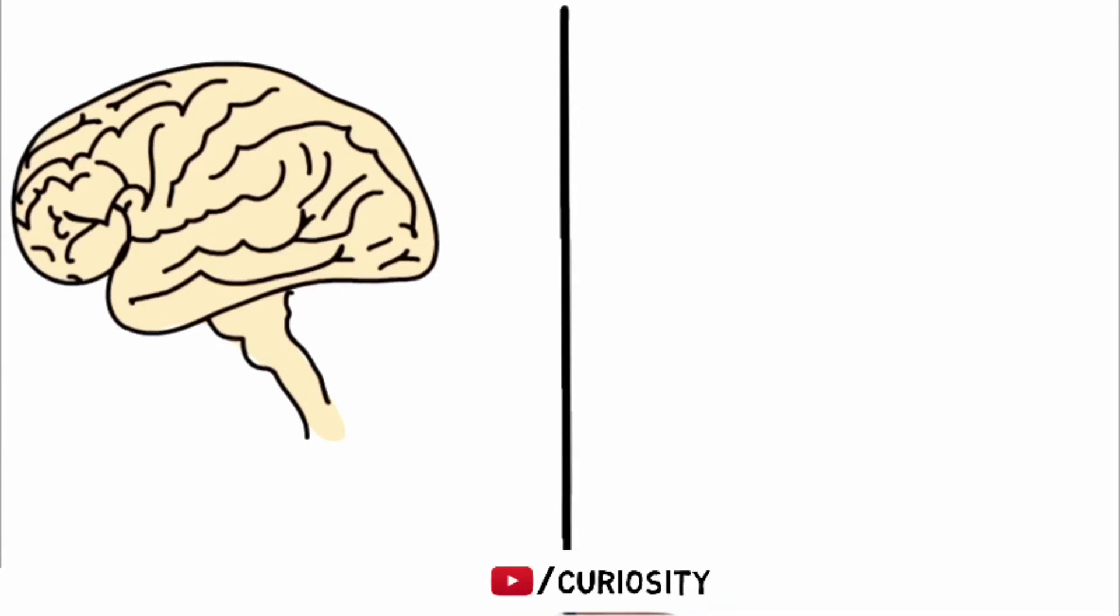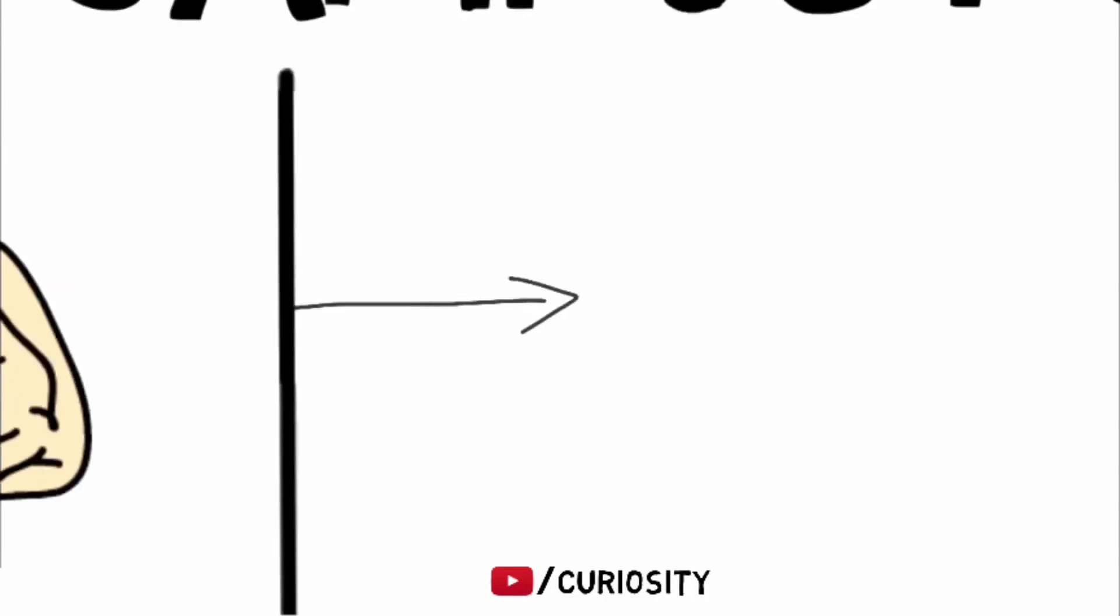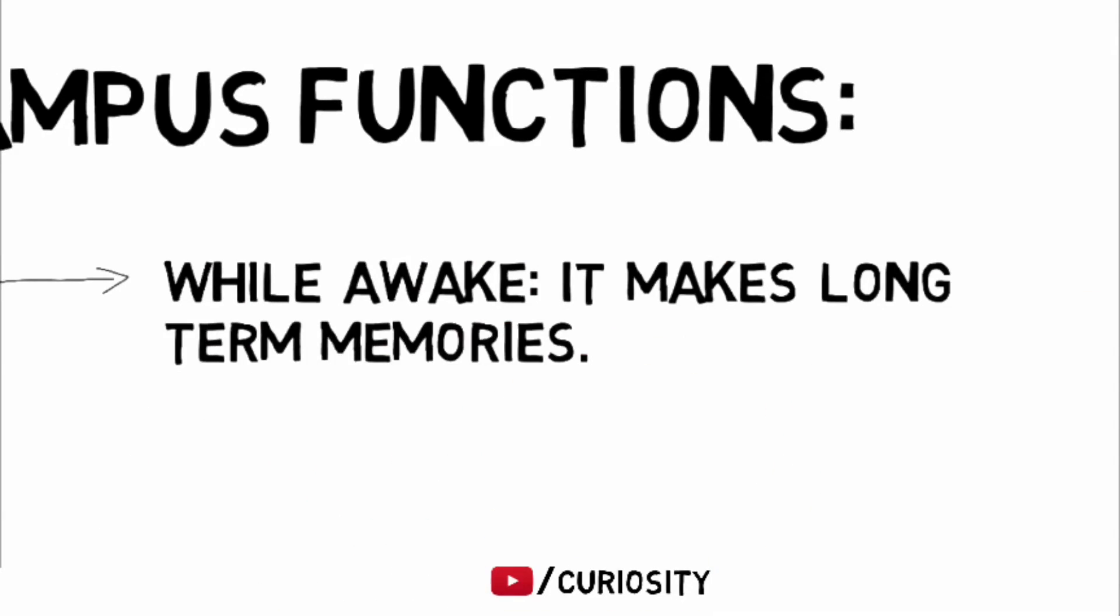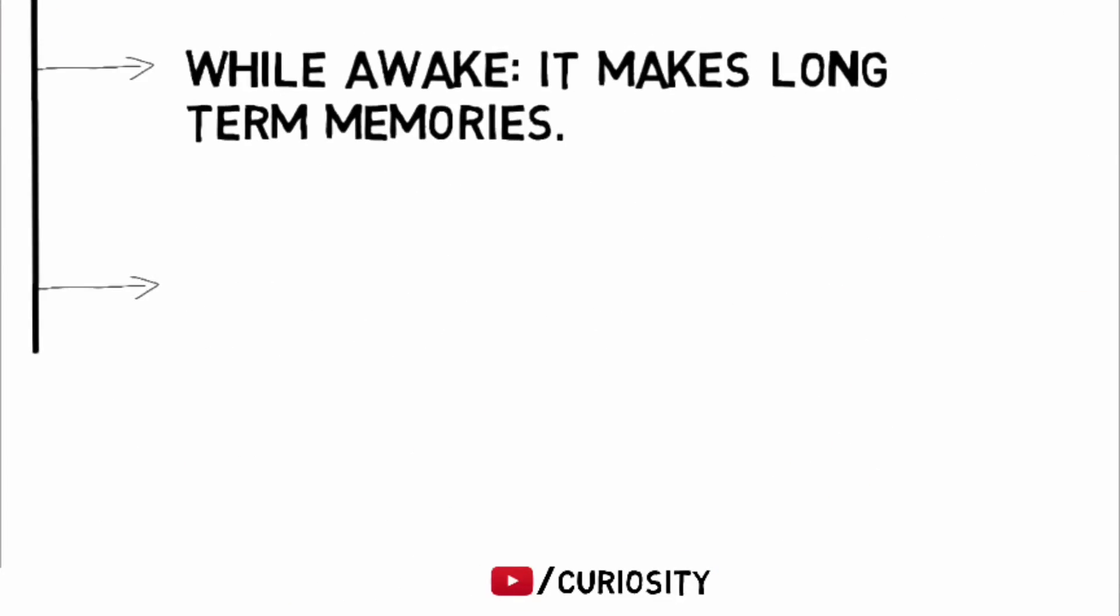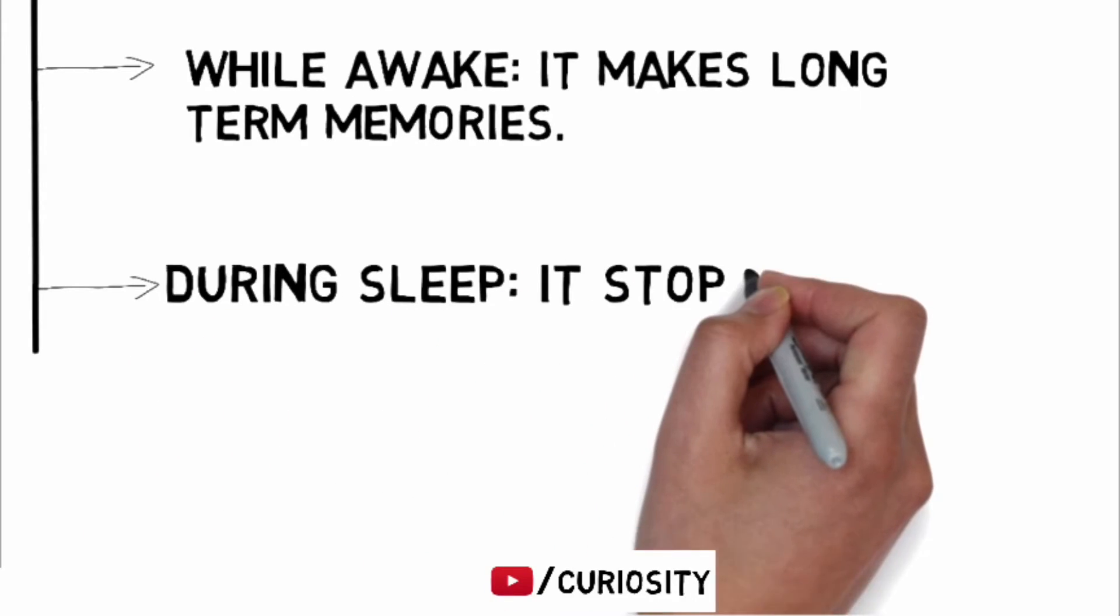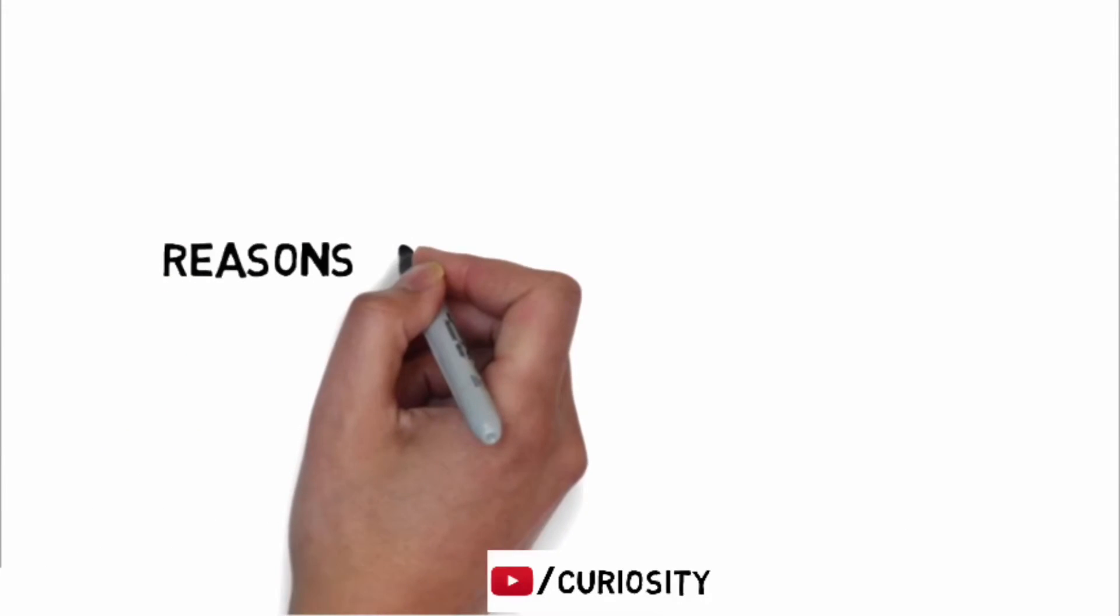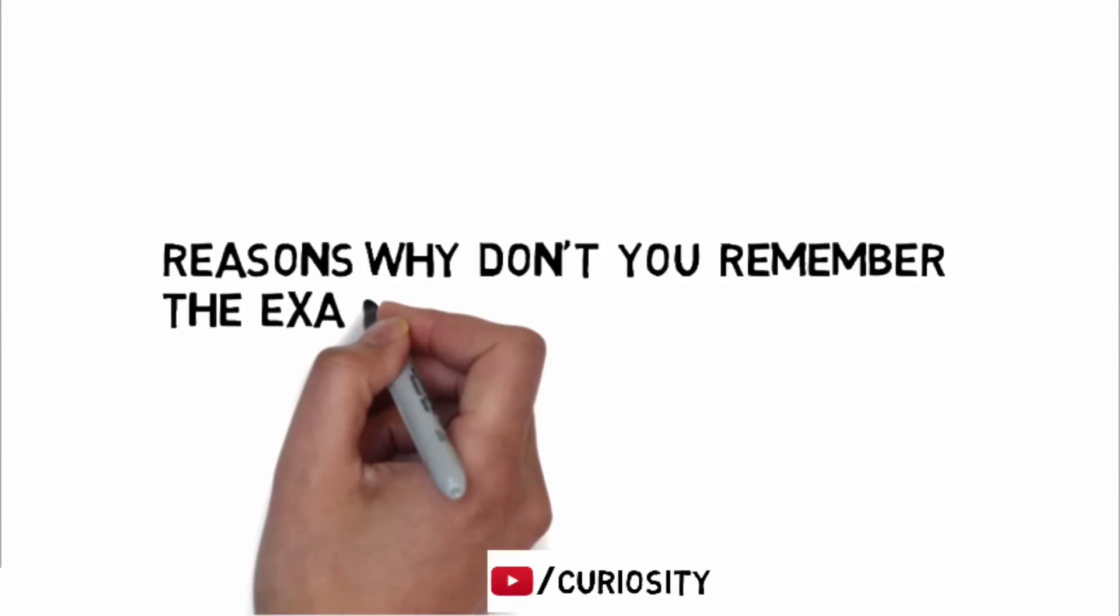While awake, it operates within a functional network whose primary focus is the forming of new memories. During sleep the hippocampus switches off these pathways and switches to a network that is heavily involved in the process of storing long-term memories. The two main reasons behind why you don't remember the exact point before you fall asleep are: